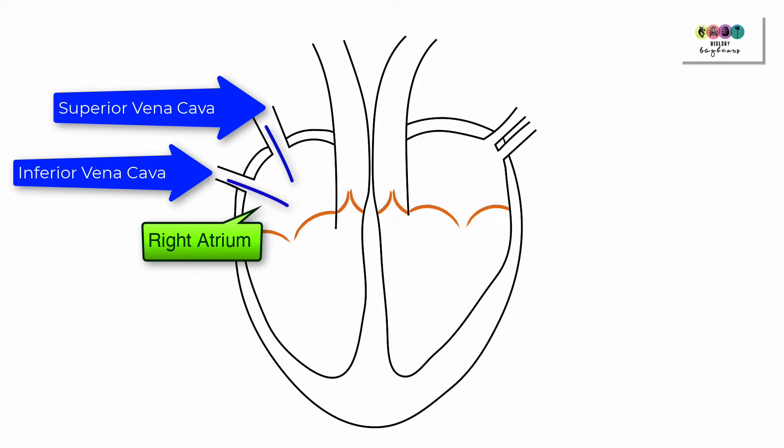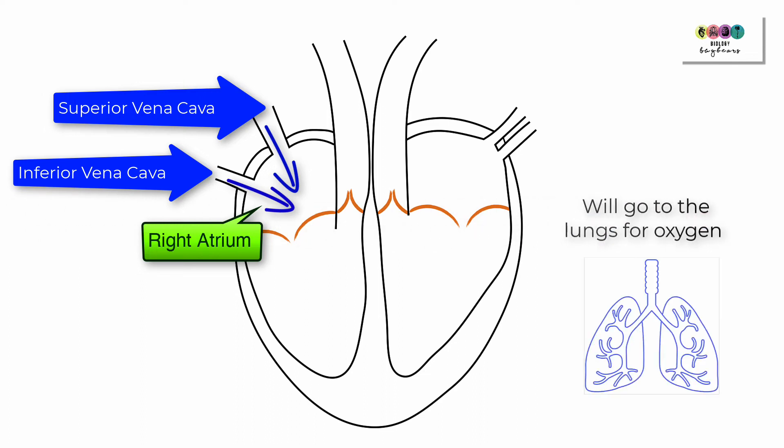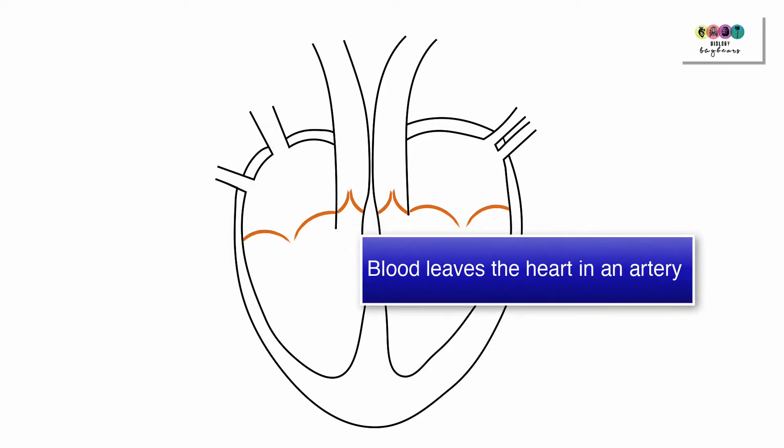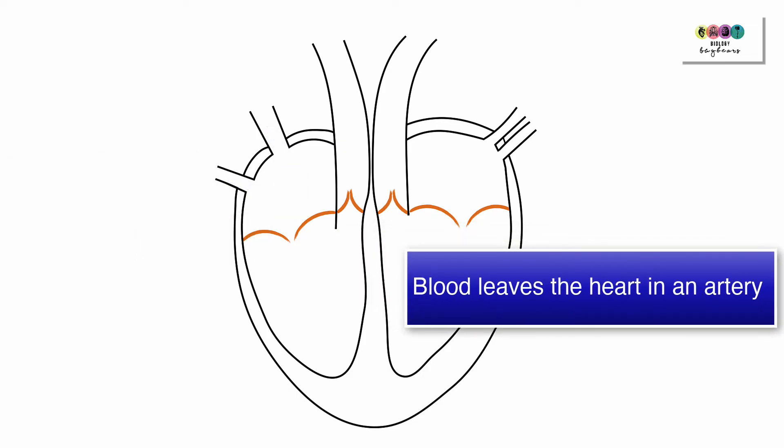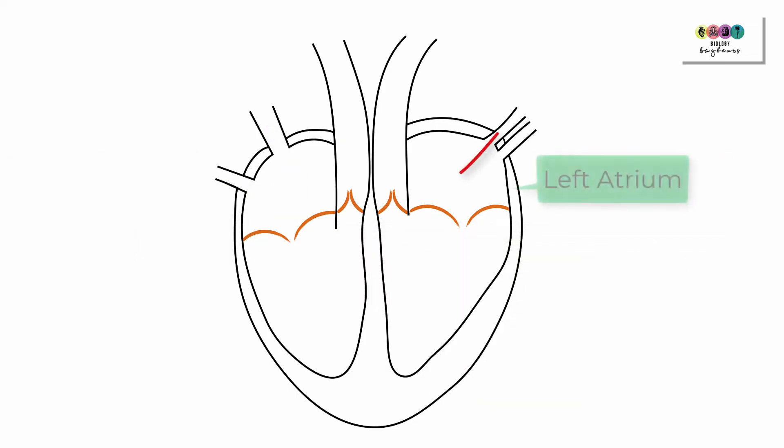Blood enters into the right side of the heart, the right atrium, through two veins—the superior and inferior vena cava. This blood is lacking in oxygen and needs to go to the lungs. When blood is flowing away from the heart, it's leaving in an artery. Let's take a look at the left side of the heart. The blood entered through a pulmonary vein into the left atrium.